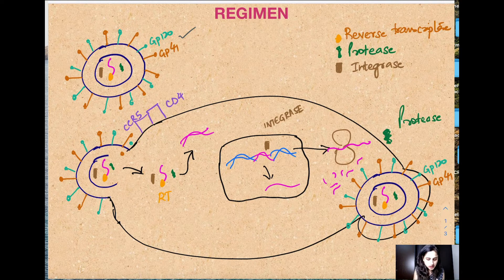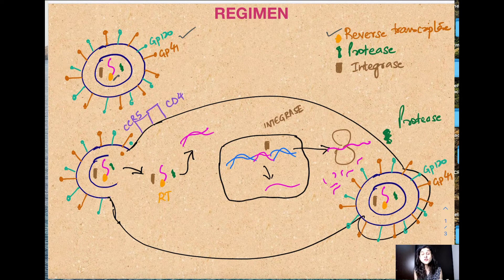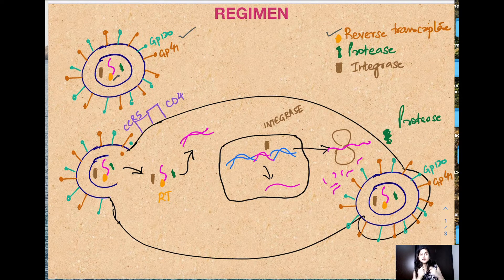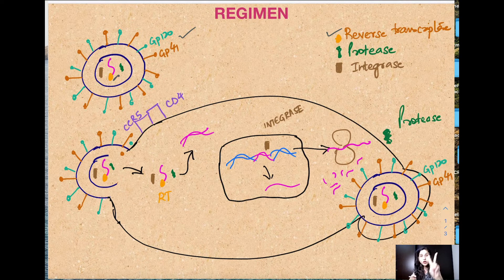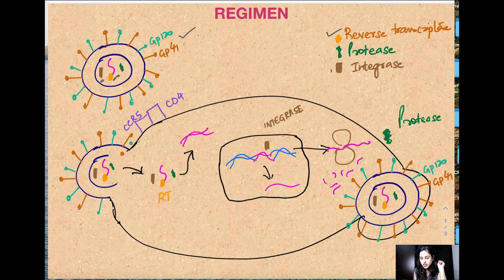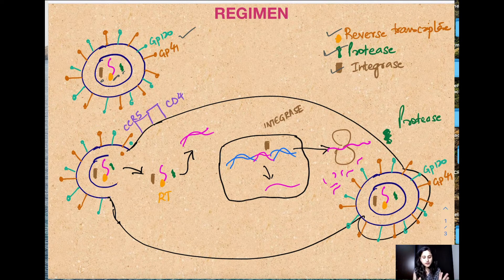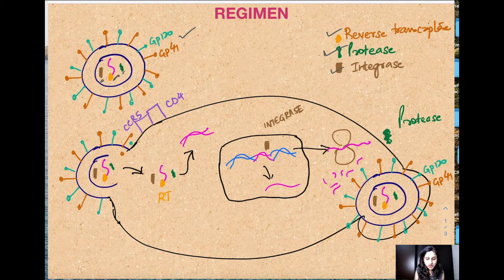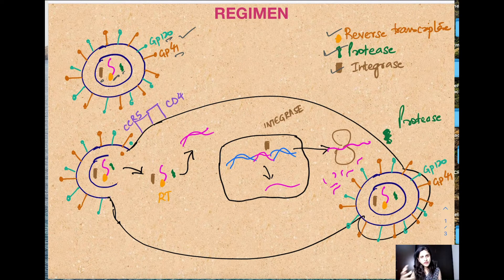This orange thing represents an enzyme called reverse transcriptase. It carries machinery with itself - reverse transcriptase, the brown one called integrase, and this green one called protease. On its surface it has two glycoproteins, GP120 and GP41.